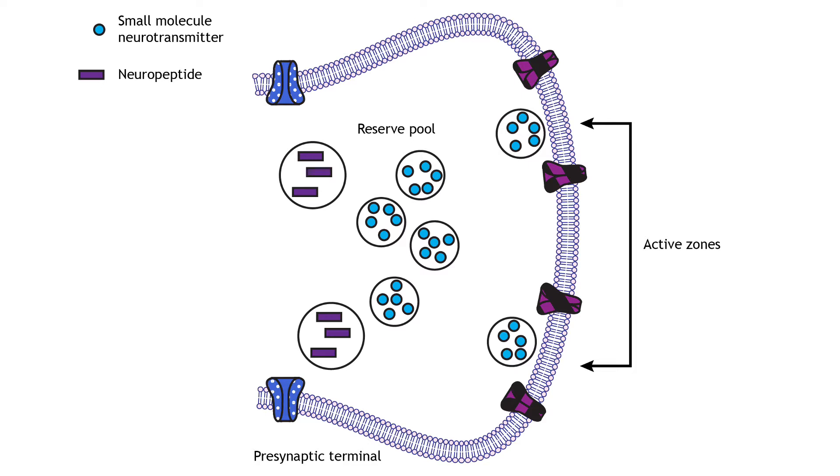Vesicles filled with neuropeptides do not dock at active zones. They are located outside of the active zone, further away from the membrane and the high density of voltage-gated calcium channels, and are therefore slower to release than the small molecule transmitters.